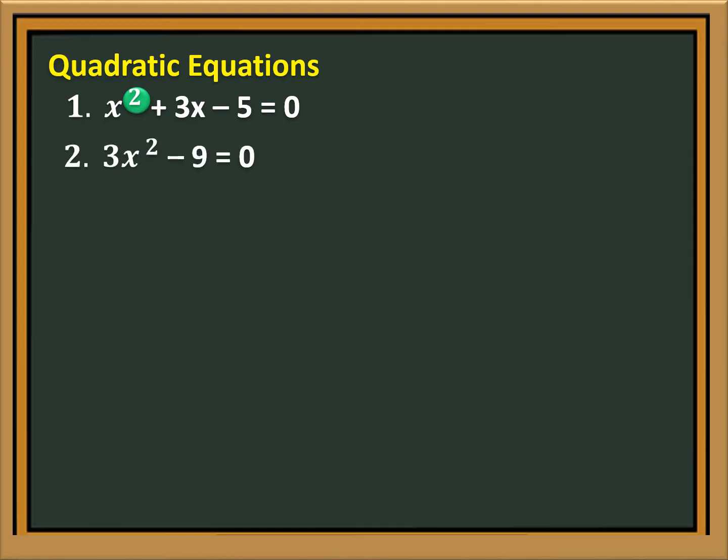Number 2: 3x squared minus 9 is equal to 0. The highest exponent of x is 2. Therefore, the equation is quadratic.